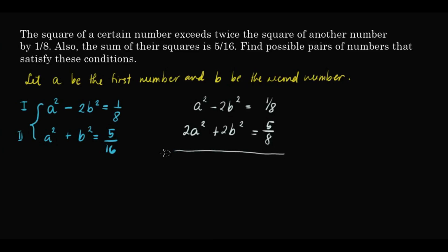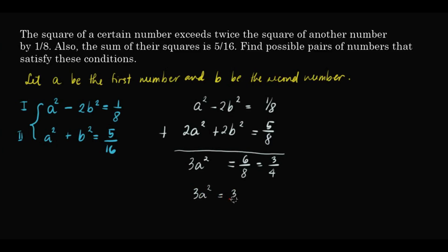You could also subtract the first equation from the second to cancel out a squared — that's another valid approach. But for this, let's eliminate b squared. Adding the two equations gives us 3a squared, and b squared cancels out. The right side is 1 over 8 plus 5 over 8, which is 6 over 8, or equivalently 3 over 4. So 3a squared equals 3 over 4.